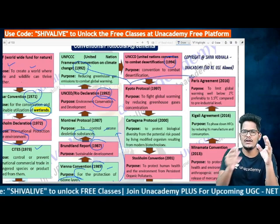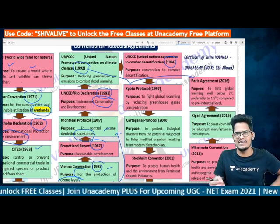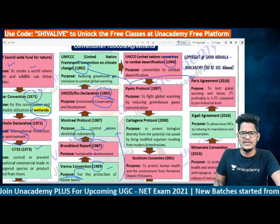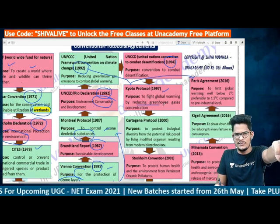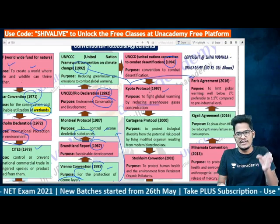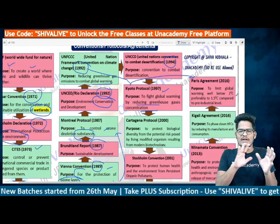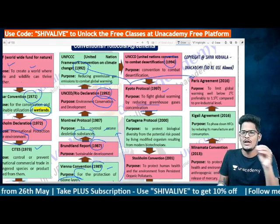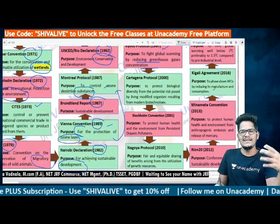Under UNFCCC, two major agreements evolved: the Kyoto Protocol (1997) and the Paris Agreement (2016). The Kyoto Protocol was established in 1997 to fight global warming by reducing greenhouse gases. The Paris Agreement of 2016 similarly aims to limit global warming by reducing greenhouse gas emissions. Both Kyoto and Paris Agreement came under the UNFCCC framework.